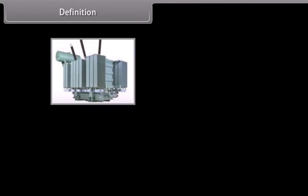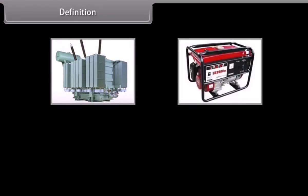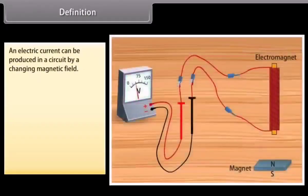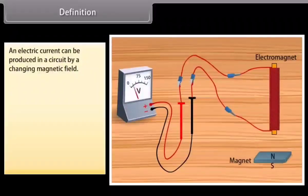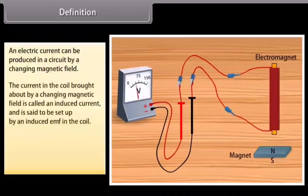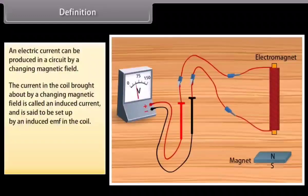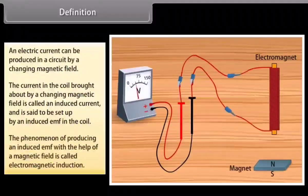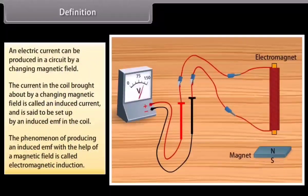In our everyday life, electromagnetic induction plays a vital role. Transformer, generator, train, and telephone are some examples which work on the principle of electromagnetic induction. An electric current can be produced in a circuit by a changing magnetic field. The current in the coil brought about by a changing magnetic field is called an induced current, set up by an induced EMF in the coil. The phenomenon of producing an induced EMF with the help of a magnetic field is called electromagnetic induction.